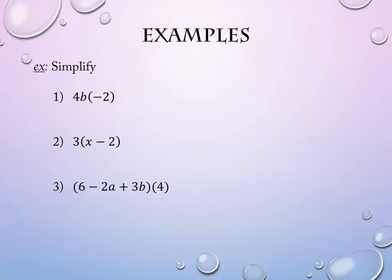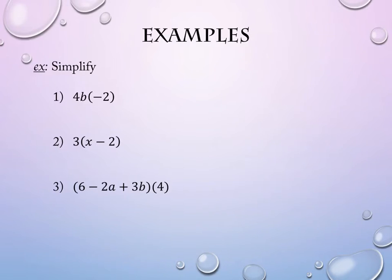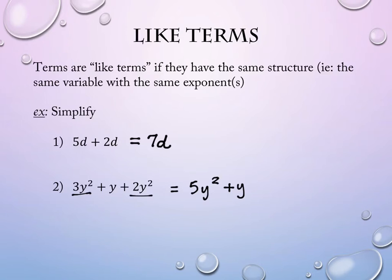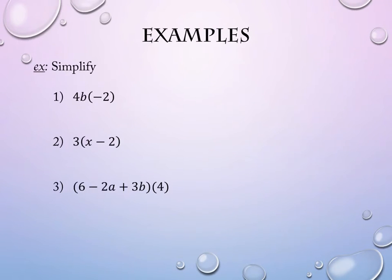Problem number one — actually, these are examples three through nine; I was trying to make it smooth so all my numbers went in order, and I already did examples one and two but forgot to change it on my slides. I'll get those adjusted later. Anyway, problem three has parentheses, but they do not have addition or subtraction in them — the number inside the parentheses is just the number negative two.